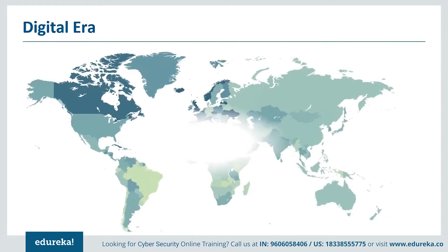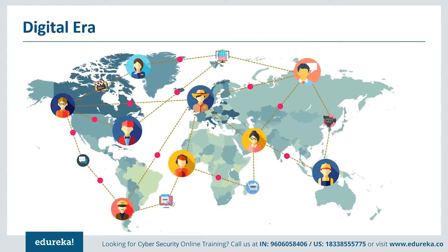The internet today informs, entertains and connects us. It's the backbone of the global economy. Our devices, which are connected through the internet and other networks, open up a world of possibilities in front of us. For example, we can access information without having to keep it on our devices permanently. We can easily communicate with others across the world. These connected devices form the network that helps us run our lives, but these connections also leave our devices vulnerable to damage and our information vulnerable to theft.